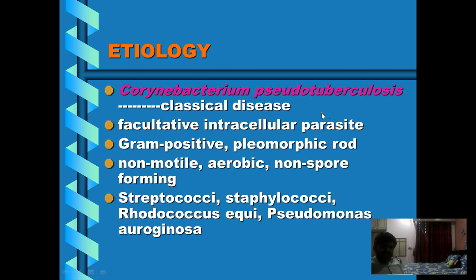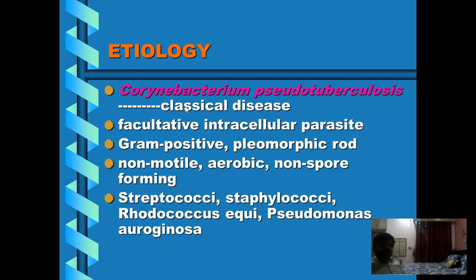As discussed in caseous lymphadenitis of sheep and goat, Corynebacterium pseudotuberculosis produces a phospholipase exotoxin — phospholipase D — that increases vascular permeability of the capillaries. It has an inhibitory effect on phagocytosis, preventing phagocytosis by host immune cells, and facilitates the spread of infection in the host. The biotypes associated with ulcerative lymphangitis in cattle and horses differ from those associated with caseous lymphadenitis in sheep and goat.